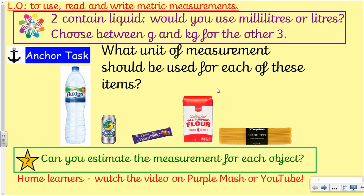First job: what unit of measurement should be used? Have a go at working that out. Then look at the challenge: can you estimate the measurement for each object? Imagine a large-sized water bottle from the supermarket, an average normal-sized can, an average normal-sized Dairy Milk — not one of the ginormous ones — a normal-sized bag of flour, and a normal-sized pack of spaghetti. Try to estimate without digging around in your cupboards.